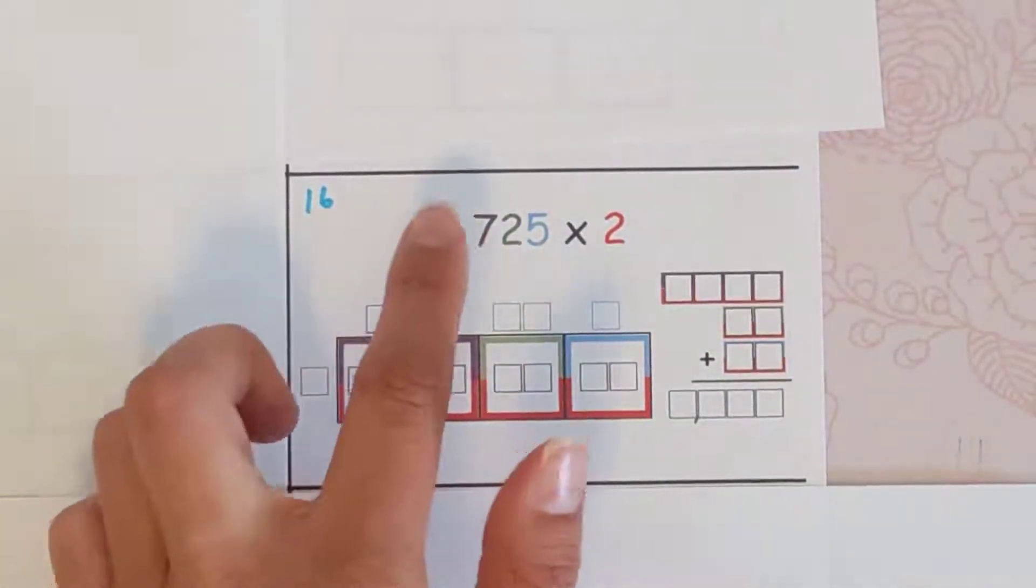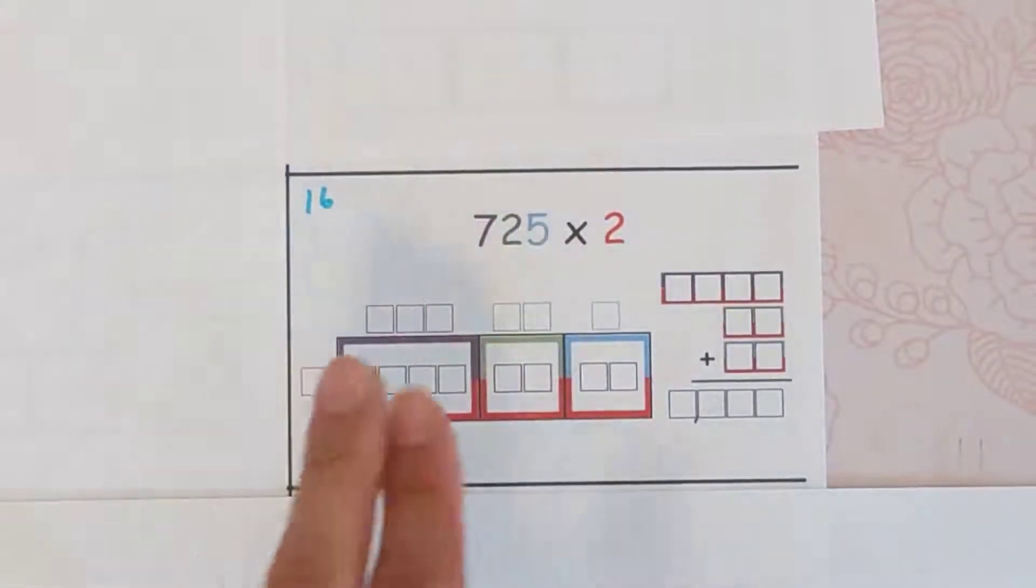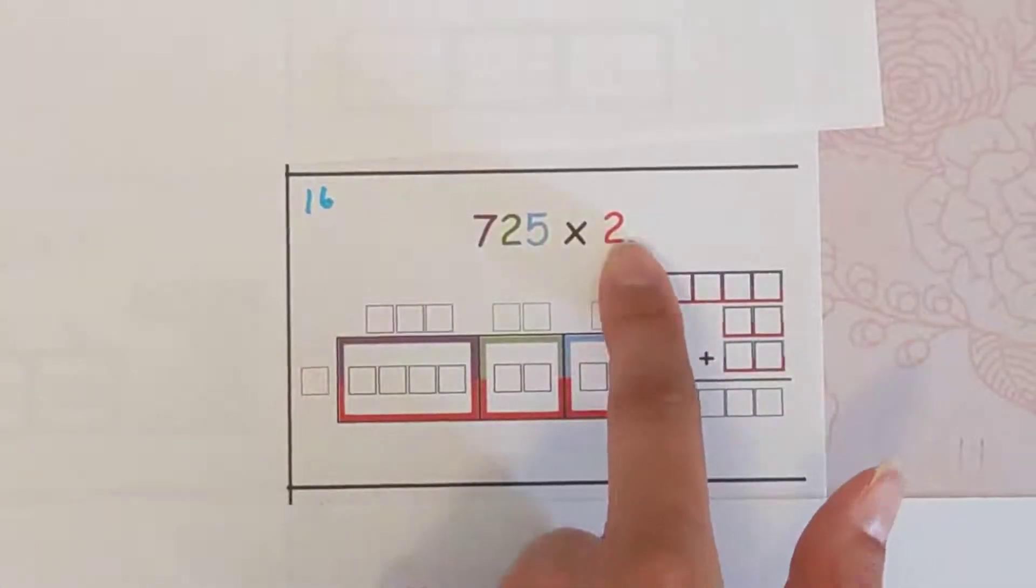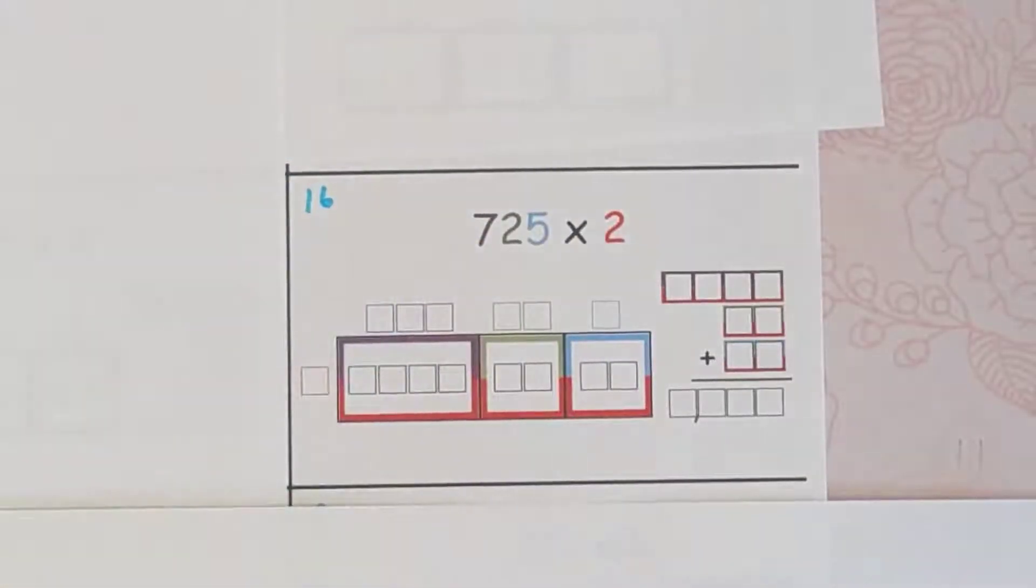This number, 725, has three digits—7, 2, 5—so we have three boxes. And then the 2 is just one digit, so that's why it's only one row here and it doesn't keep going down.